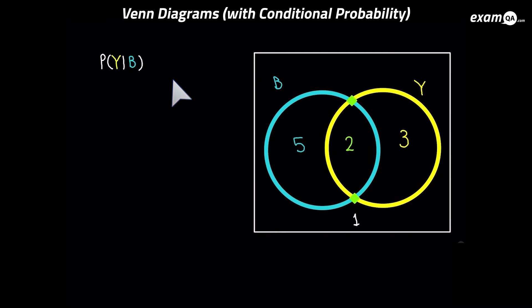Let's try another one. Now we're asked what probability of Y given B. So we need to work out the probability of Y given that B has definitely happened. So B has definitely happened. So there's no point looking at anything outside B because we know that B has definitely happened. It says given B.